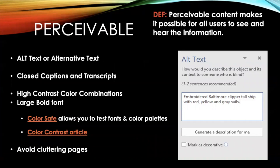Number one: perceivable content makes it possible for all users to see and hear the information. In addition to providing for the needs of neurotypical learners, it is also necessary to take into account the thousands of individuals using screen readers, either because of a visual or cognitive impairment. For these learners, listening is an easier — sometimes the only — option for understanding digital materials.